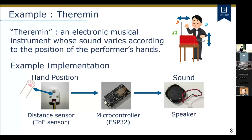Throughout this presentation, I use a simple implementation of a theremin as an example. The theremin is an instrument that controls its sound by detecting the position of the performer's hands with antennas. The example shown here is a simple one that controls the frequency and volume of the output sound using a single TOS sensor that measures the distance to the performer's hand. Now I will show how to implement this example using functional reactive programming.